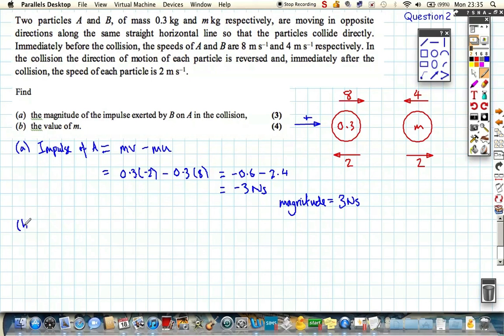If we jump down to part B now, we'll find the value of M. So in this case, we're going to use what I'm going to write as PCM. It's important to write this down. This stands for the principle of the conservation of momentum. Now this means the total momentum before impact is equal to the total momentum after impact for the whole system. Not looking at an individual particle like we did for the impulse when we just looked at A. We're looking at the total before and the total afterwards.